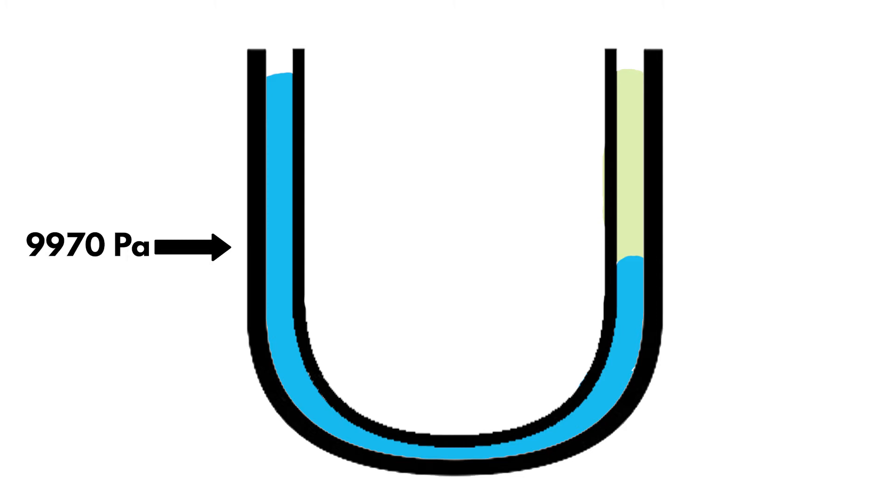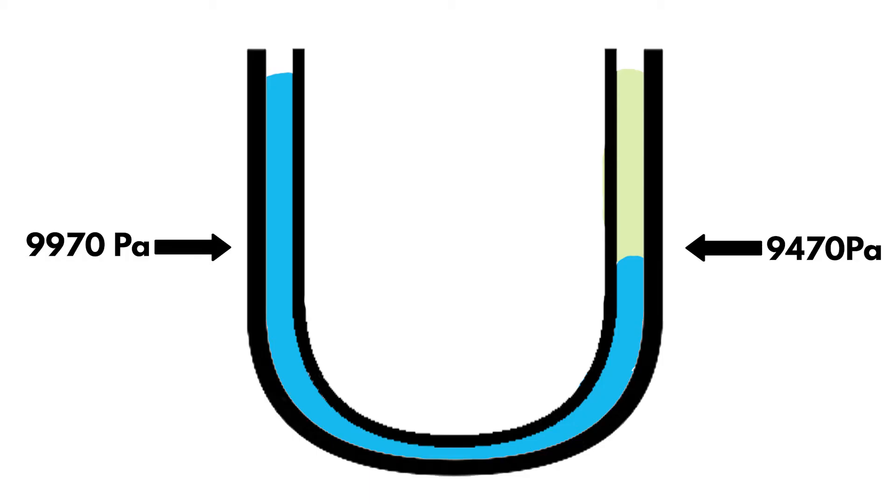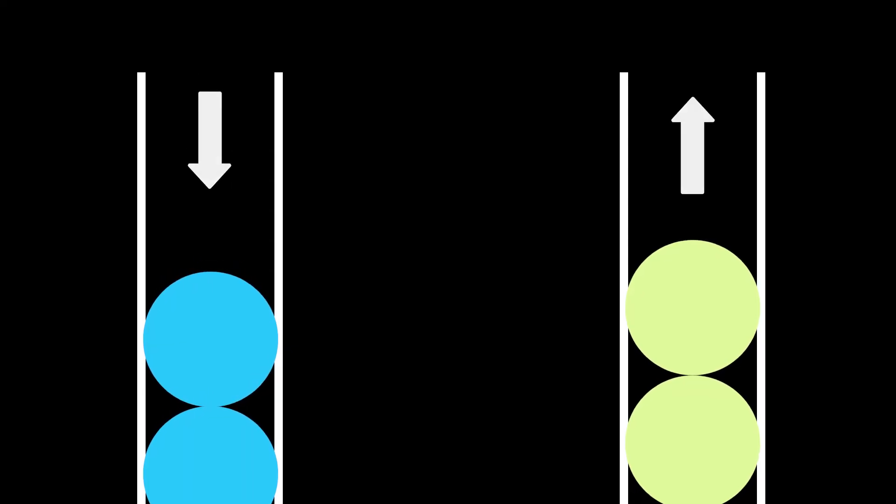On the right side, we have to calculate the pressure of both oil and water, and then add them together. We know that half of it is water and the other half is oil, so we can easily calculate this using the same equation. This gives us a total force of 9478 Pa. This means that it has less pressure than the left side, so the left side will push up the right side in order to balance the pressure.